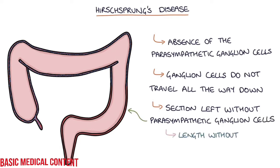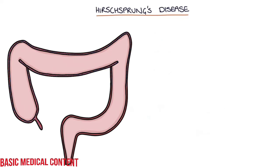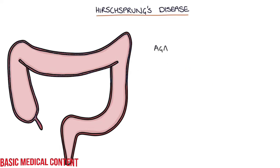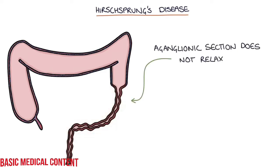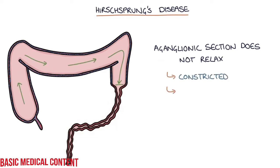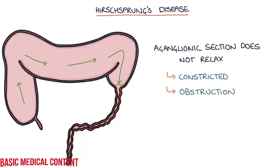The length of the colon without innervation varies between patients from a small area to the entire colon. When the entire colon is affected, this is called total colonic aganglionosis. The aganglionic section of the colon does not relax, causing it to become constricted, leading to a loss of movement of feces and obstruction. Proximal to the obstruction, the bowel becomes distended and full.